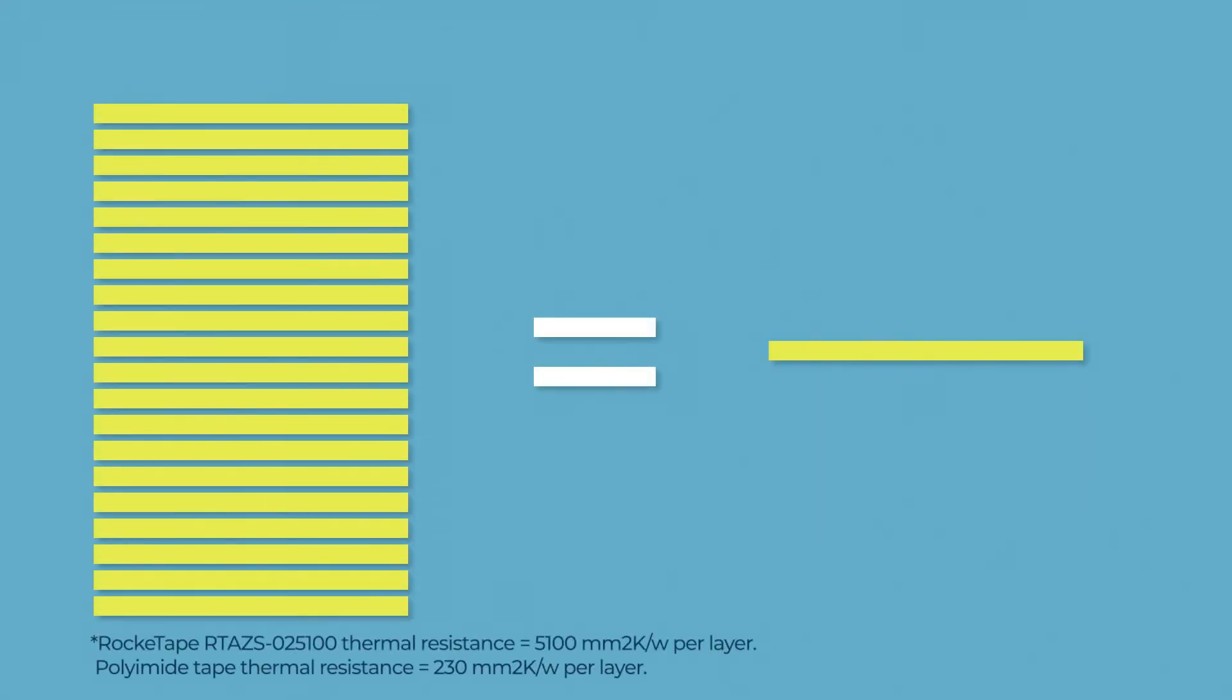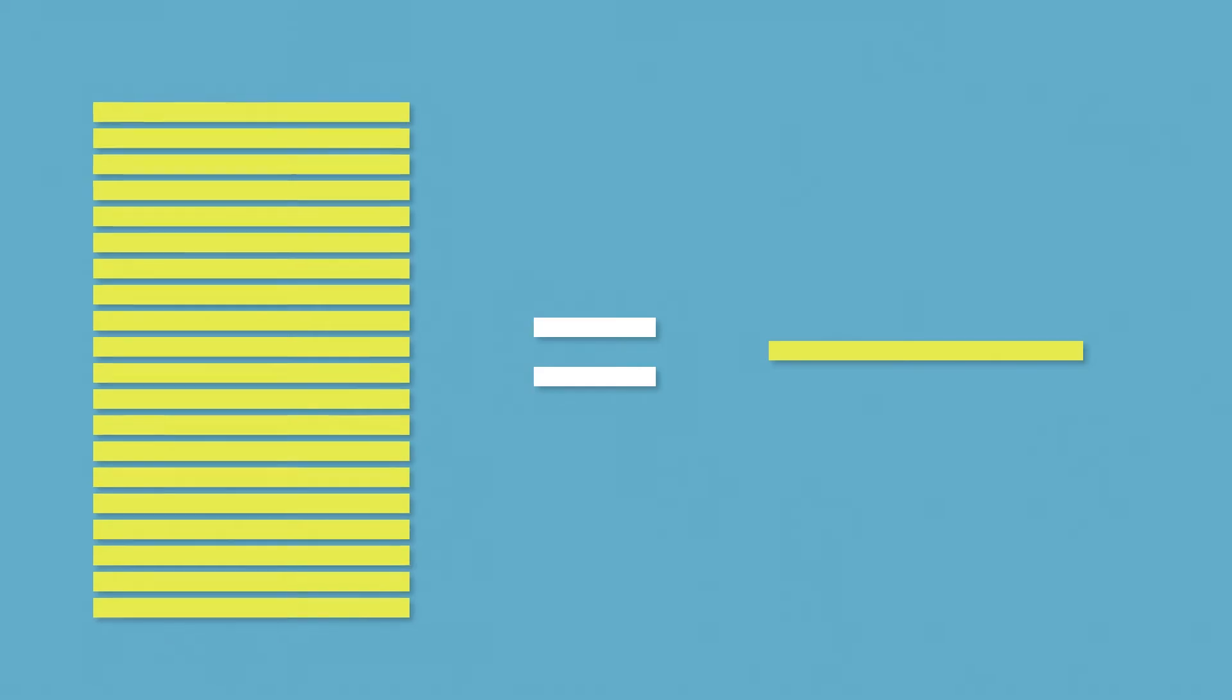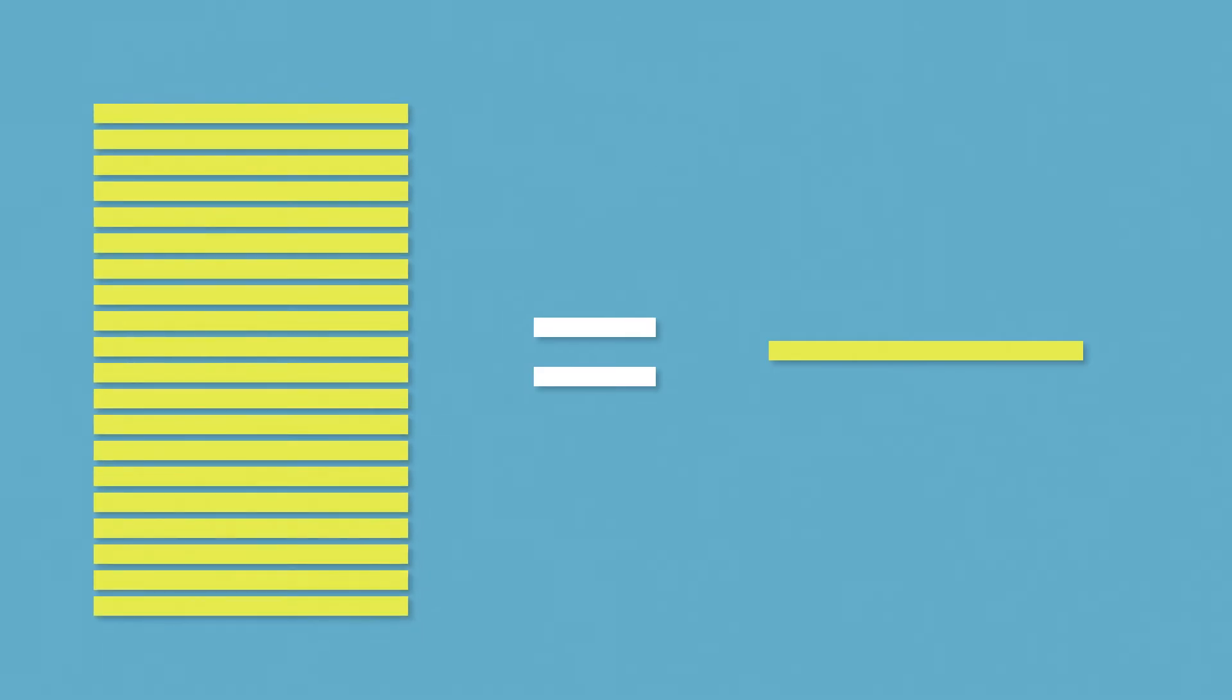Just one layer of aero zero tape provides the equivalent thermal resistance of more than 20 layers of standard polyamide tape. That means real material cost and time savings. Instead of having to wrap your component 20 times, you only have to use one layer of our material to achieve comparable performance.